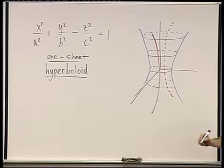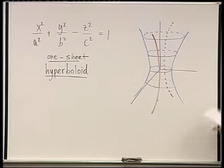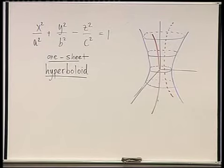The other one is going to be called a two-sheet hyperboloid. Its equation is very similar — minor changes make very significant differences: x²/a² + y²/b² − z²/c² = −1. That's the difference: the right-hand side is negative one instead of positive one.